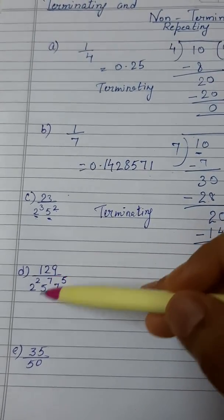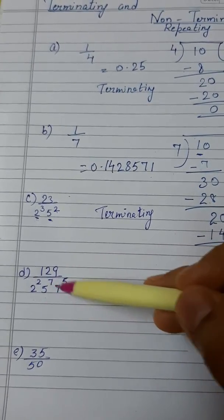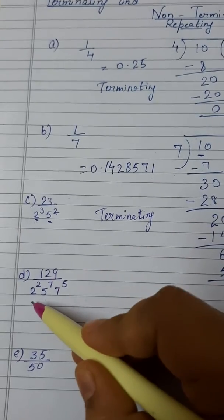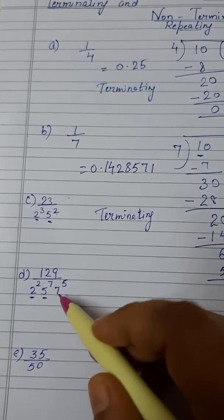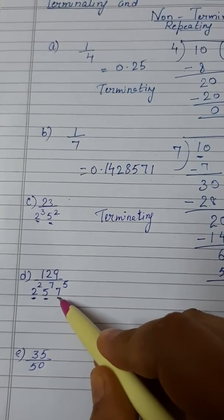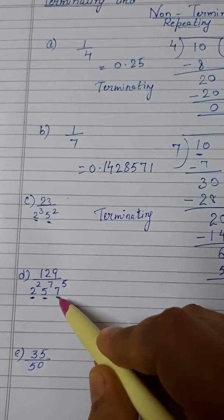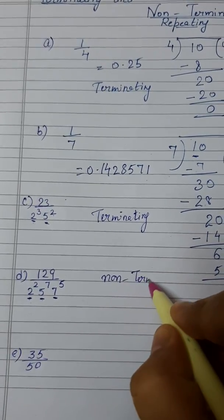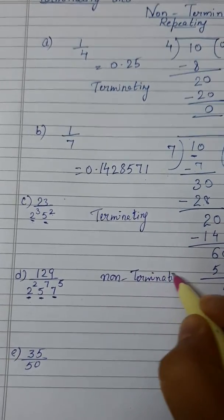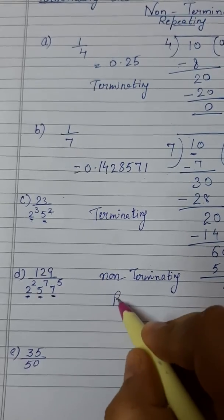And next one is 129 divided by 2 square 5 raised to power 7 and 7 raised to power 5. See we are having 2 raised to power square and 5 raised to power 7, but along with these I also have 7 raised to power 5. So it will be non-terminating. It will be non-terminating repeating.